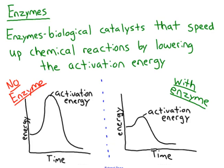Enzymes are biological catalysts that speed up chemical reactions by lowering the activation energy. On the left is a reaction with no enzyme — it takes a lot of energy and time. On the right is a reaction with an enzyme — it requires less time and less energy. So an enzyme is a biological catalyst.